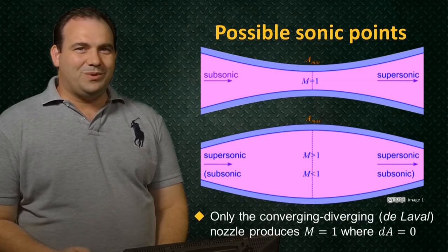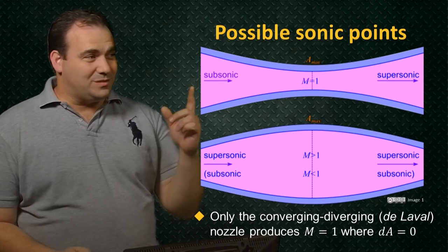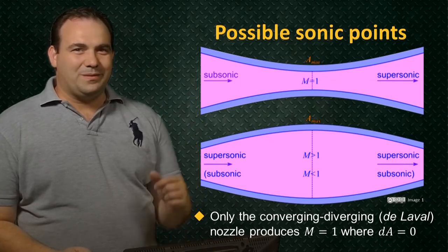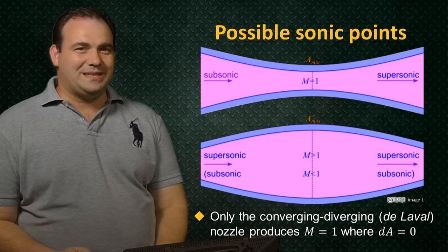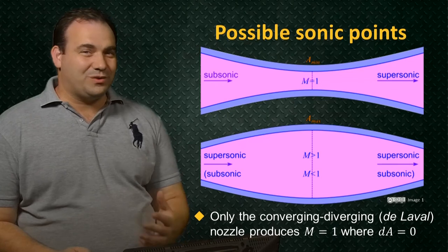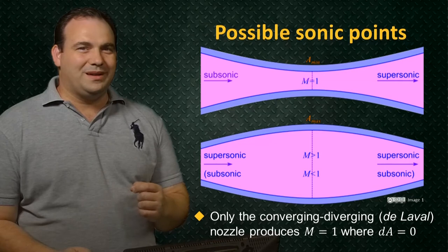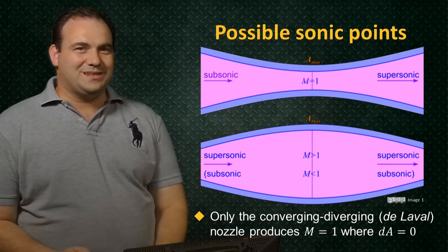This implies that only a converging-diverging nozzle, such as the one shown in the top image, is going to produce sonic flow where there's no area change. This type of nozzle is known as a De Laval nozzle after its inventor, and it's the only means to accelerate a subsonic Mach number to a supersonic one via a steady process.